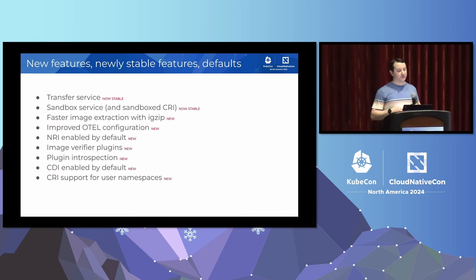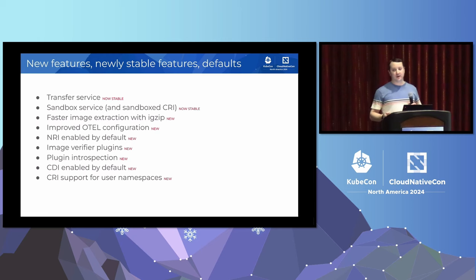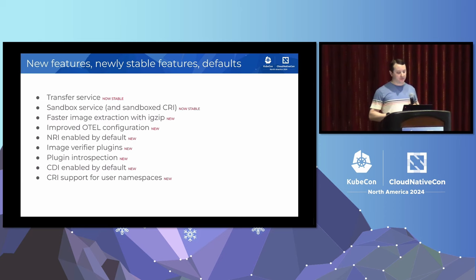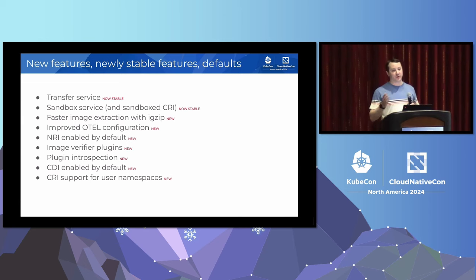The transfer service and the sandbox service were experimental things that we launched in ContainerD 1.7, and we have now gone through and stabilized them — they're ready for people to start really using. We've got some improvements in performance in things like image extraction, some changes in how you can configure OTEL, new defaults like NRI turned on by default, CDI enabled by default, and we have support for user namespaces, a very improved set compared to what we had before.